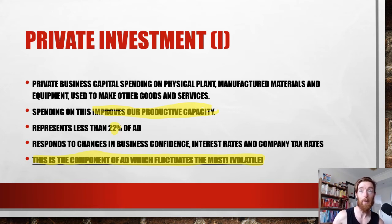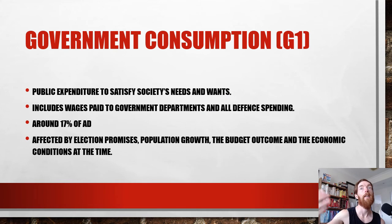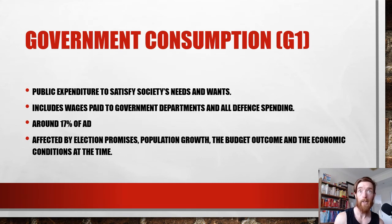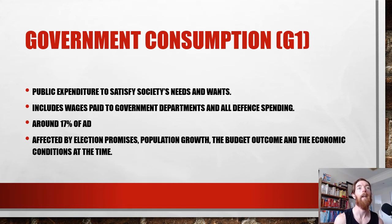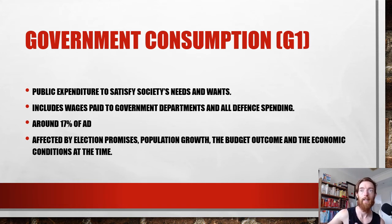It's worth noting that questions like 'what's the largest component of aggregate demand' or 'which component fluctuates the most' do come up in multiple choice. Government spending G1 is public expenditure to satisfy society's needs and wants, including wages paid to government departments and all defence spending. It's around 17% of aggregate demand. For example, teacher wages are part of G1. It's affected by election promises, population growth, the budget outcome, and economic conditions — with population growth meaning the government needs to spend more on social services.